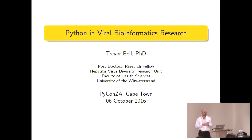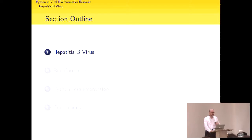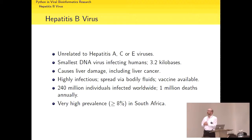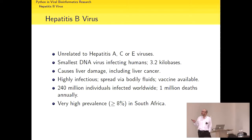My research was based on hepatitis B virus with some bioinformatics thrown into it. I wanted to sketch out what I'd done and how I'd used Python. First, two slides about hepatitis B virus. It's unrelated to the other hepatitis viruses — A, C, and E are unrelated entirely. It's the smallest DNA virus infecting humans: 3.2 kilobases. The human genome is 3 billion bases — orders of magnitude smaller.